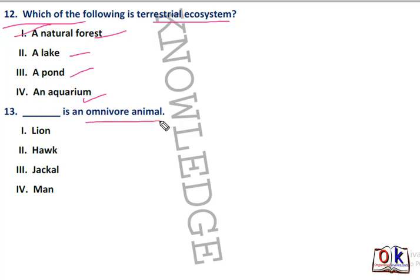Next question: dash is an omnivore animal. Options are lion, hawk, jackal, or man. Man will be the right answer — fourth option.